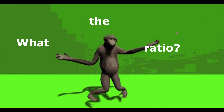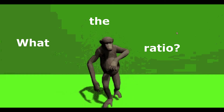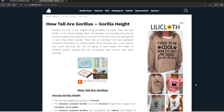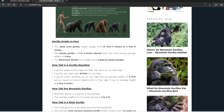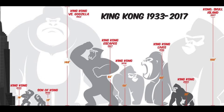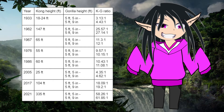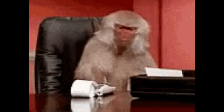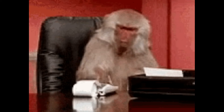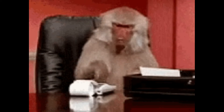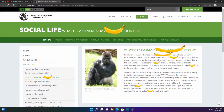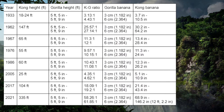First, we have to find the height ratio between Kong and an average silverback gorilla. Male silverbacks are generally between 5'5" and 5'9" tall. Kong's height has varied much more widely over the years. Here is a chart where I've listed all of his various heights and calculated the Kong to silverback height ratio, which we will now use to calculate Kong's banana size by plugging in the average silverback banana size — which, according to this website, is between 3 and 6 centimeters.